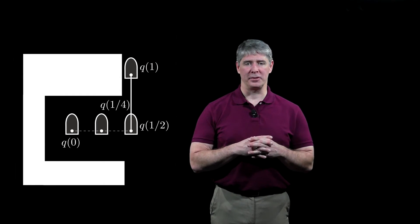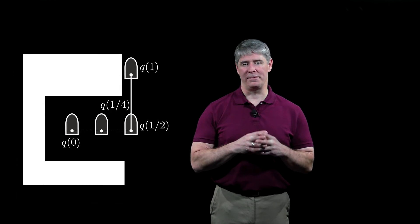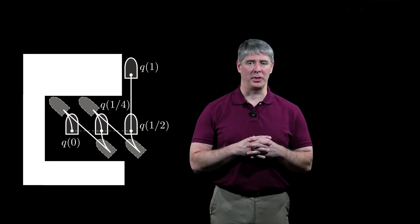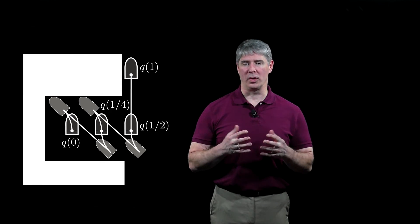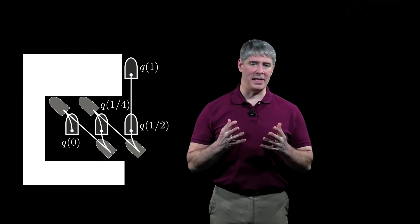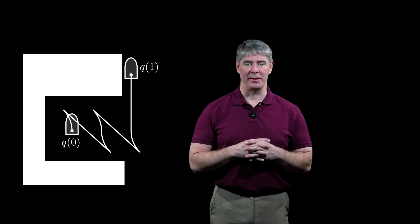So we subdivide the first path segment again and find the Reeds-Shep paths between q0 and q1 quarter and between q1 quarter and q1 half. These paths are both collision-free, so we have our final path.